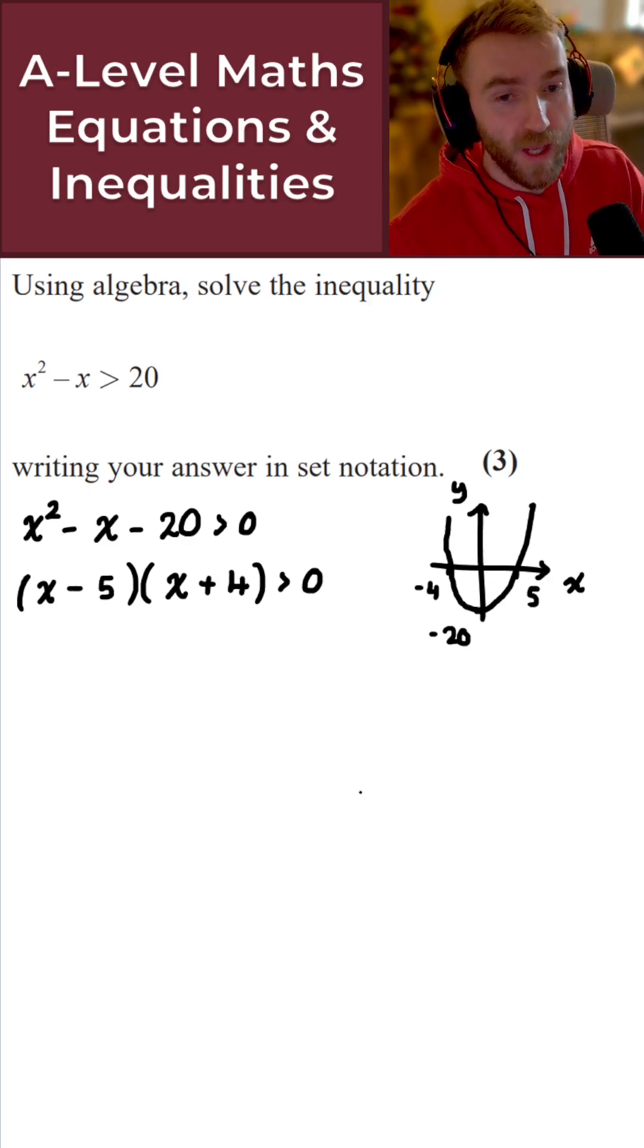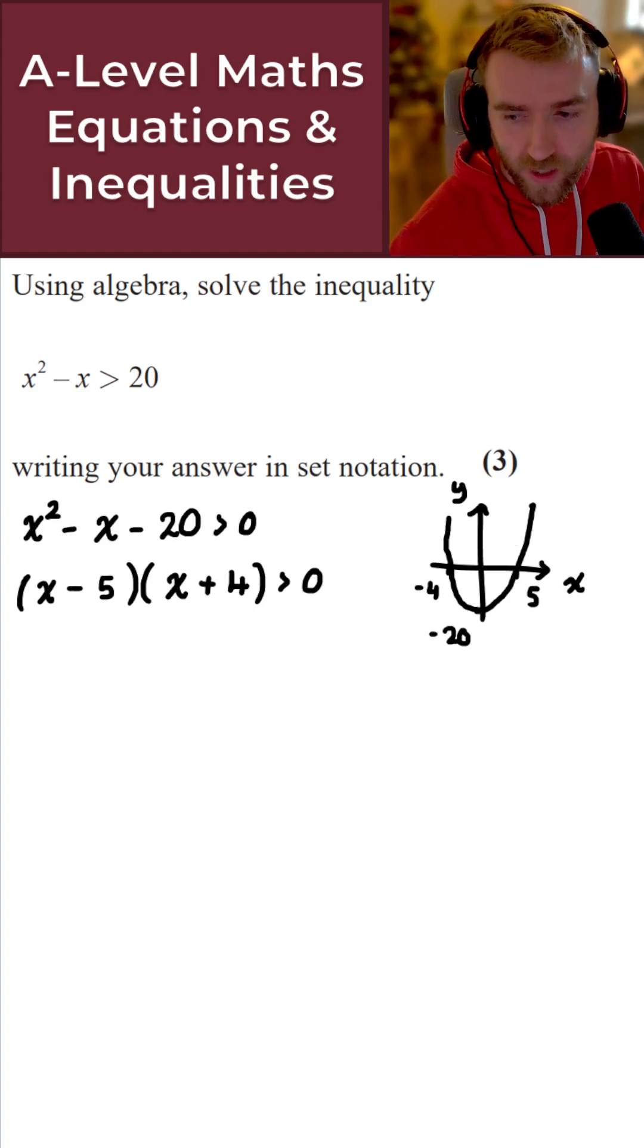What we're looking for then is where this quadratic here, quadratic curve, is above the x-axis. So what I can see then is we have two regions here, and I'll sketch these in different colors. We have everything to the left of minus 4 here. In other words, less than minus 4. And everything to the right here of 5. In other words, greater than 5.